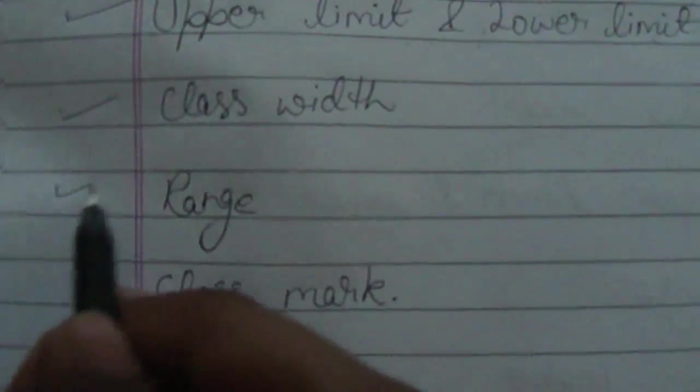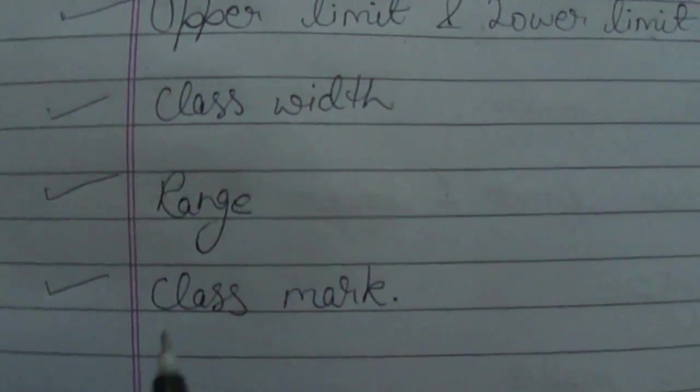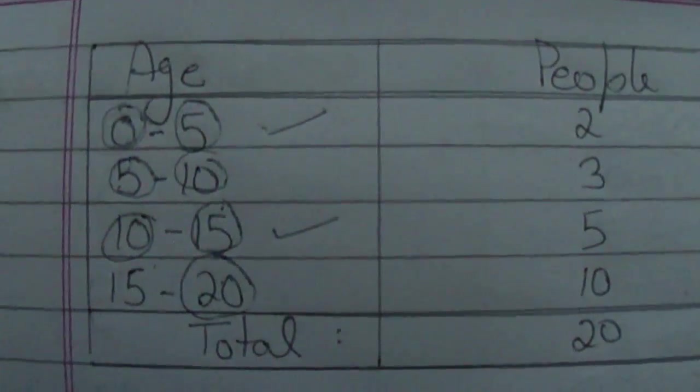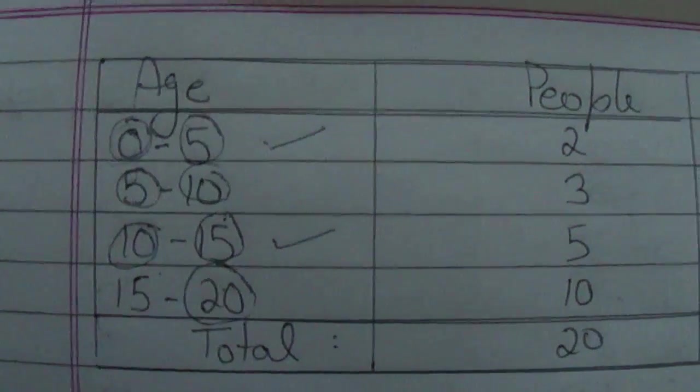Now, what is a class mark of a class? The class mark of a class is the sum of its upper limit plus lower limit divided by 2.